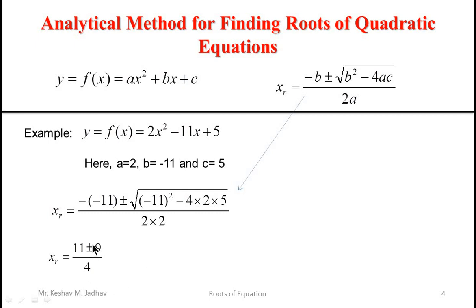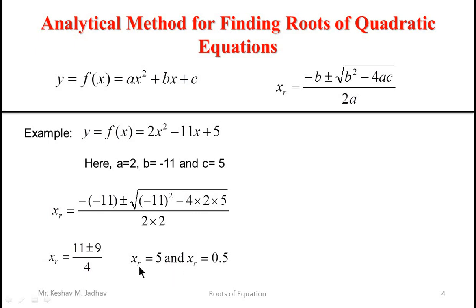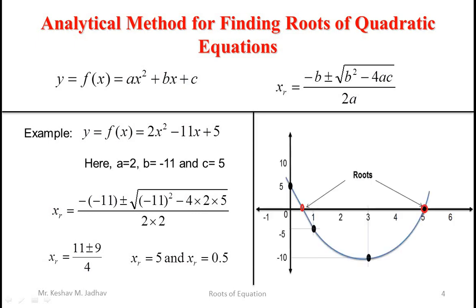Simplifying, we get xr equal to 11 plus or minus 9 divided by 4. Taking the plus sign gives 20 by 4 equal to 5, and taking the minus sign gives 2 by 4 equal to 0.5. So the roots of the quadratic equation are 5 and 0.5, giving x equal to 0.5 and x equal to 5 as the roots.